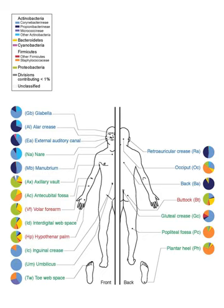Skin flora is usually non-pathogenic and either commensal or mutualistic, offering a benefit. The benefits bacteria can offer include preventing transient pathogenic organisms from colonizing the skin surface, either by competing for nutrients, secreting chemicals against them, or stimulating the skin's immune system.